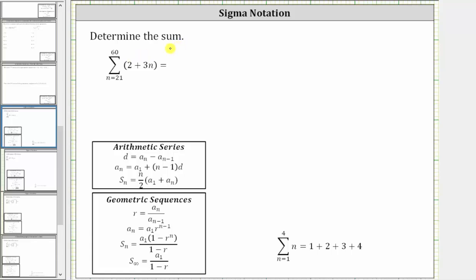We're asked to determine the sum given in sigma notation. We have the sum from n equals 21 to 60 of two plus three n. We should be able to recognize we have an arithmetic series here because the formula is two plus three n, where the common difference d is three.